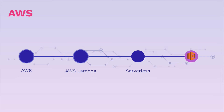AWS Lambda allows us to run just simple functions in the cloud. We're going to use the serverless framework to implement AWS Lambda into our SmartBrain application. By the end of it, you're going to feel confident working with AWS and creating functions that live in the cloud.